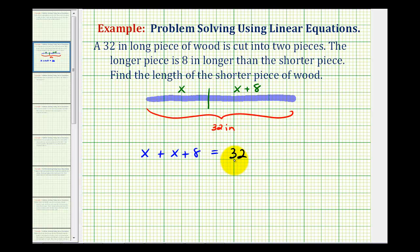And now we can solve this equation for x. We'll first combine our like terms here. x plus x would be two x. So we have two x plus eight equals thirty-two.